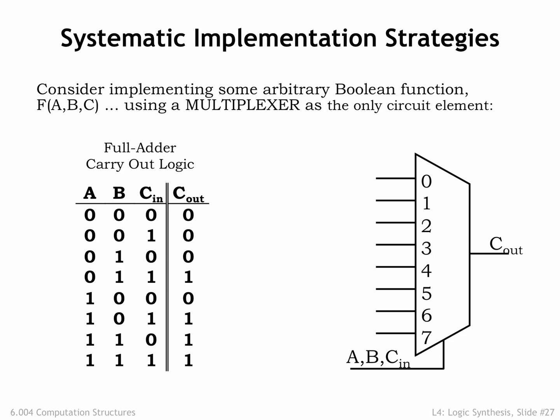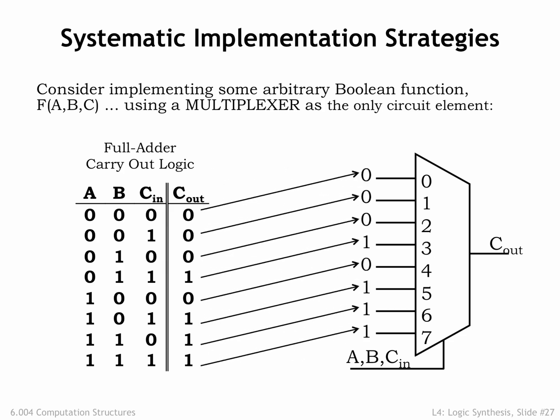How does this make it easy to implement the logic functions shown in the truth table? Well, we'll wire up the data inputs of the MUX to the constant value shown in the output column in the truth table. The values on the A, B, and C inputs will cause the MUX to select the appropriate constant on the data inputs as the value for the Cout output. If later on we change the truth table, we don't have to redesign some complicated sum-of-product circuits — we simply have to change the constants on the data inputs.